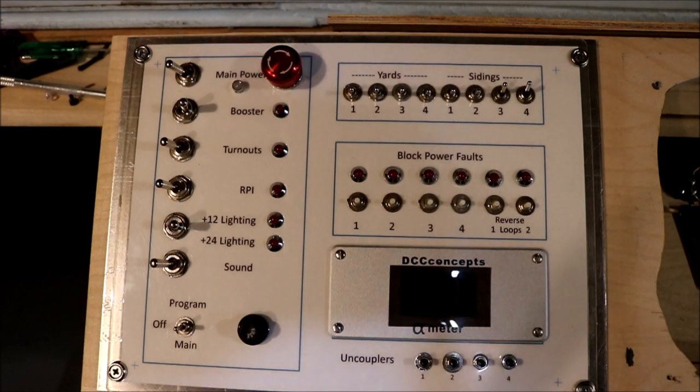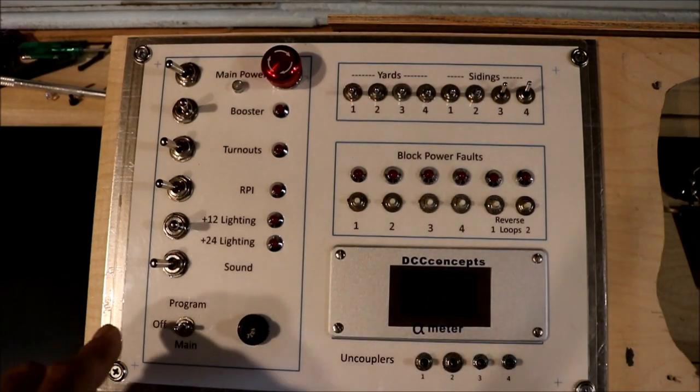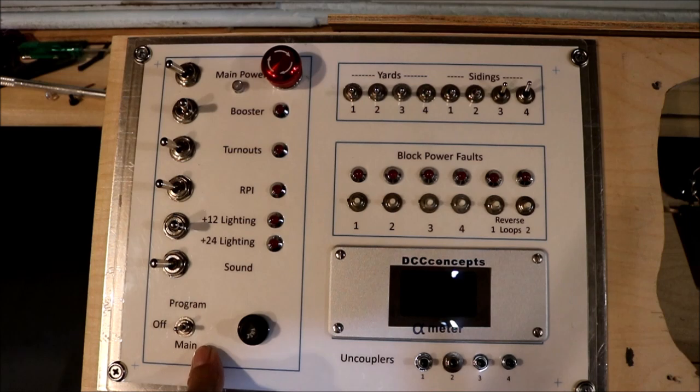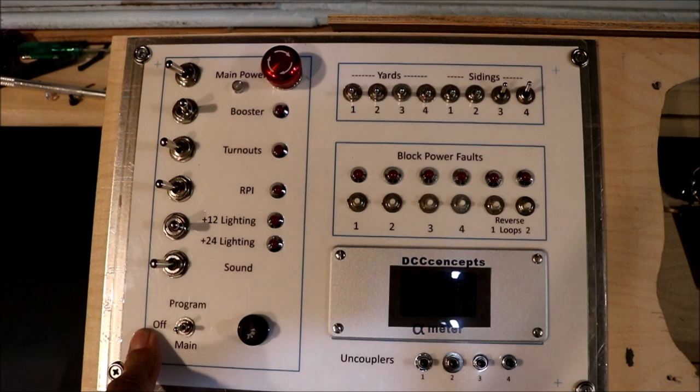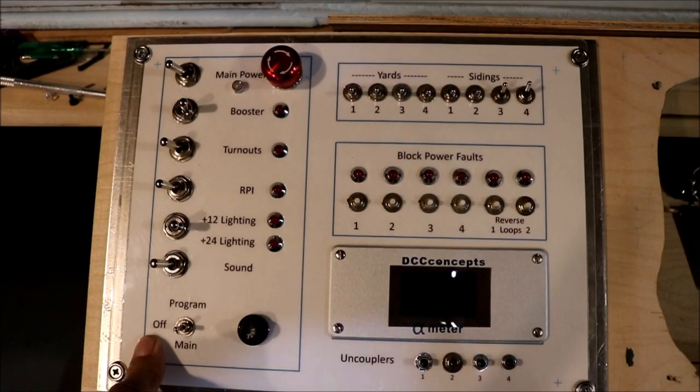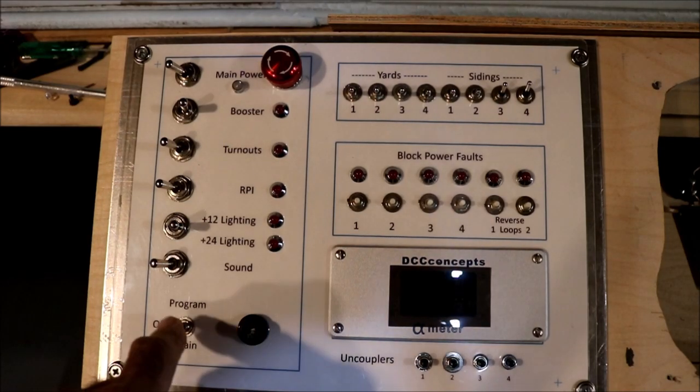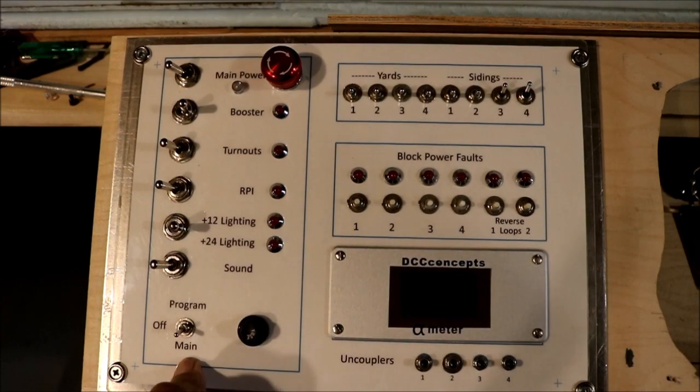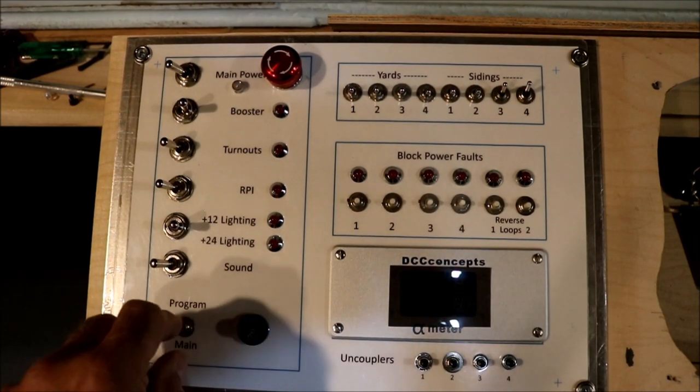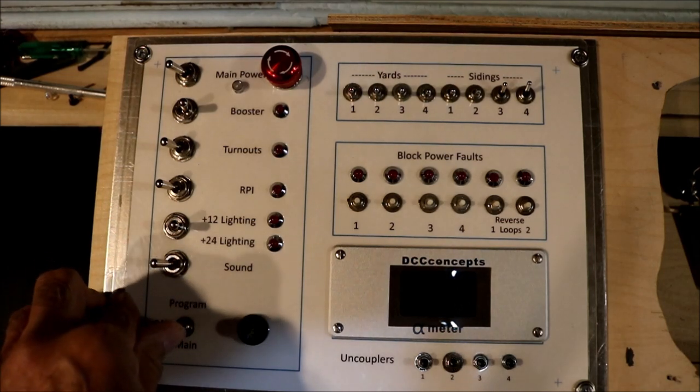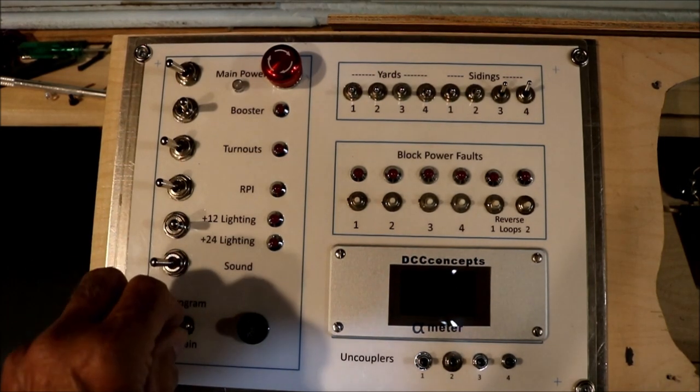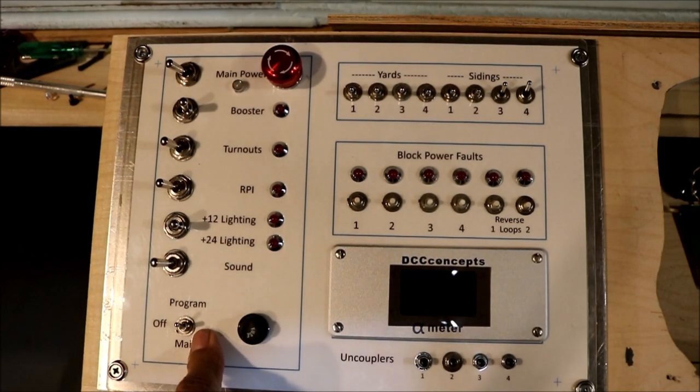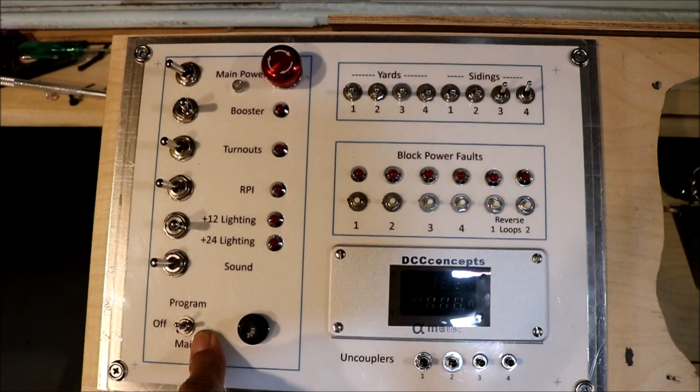The first one has to do with the program track. Down here, you see my program track, which is isolated from the rest of the layout. You have a choice. You can have the program track have no connection to anything, so it's completely dead. That's the off indication here. You can have the program track connected to the main line. If you throw the switch this way, if you throw the switch to the top, the program track is actually connected to the output of the DCS-52.